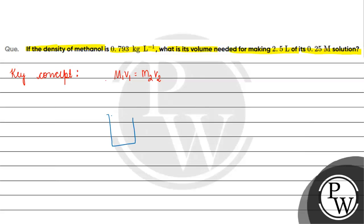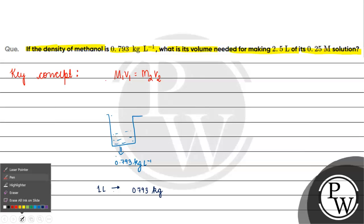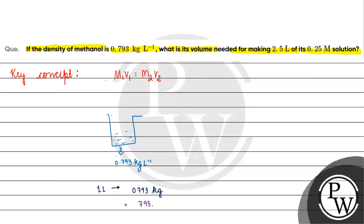What has been given? We have a solution. Its density is given, 0.793 kg per liter. That means in its 1 liter, 0.793 kg of solute is present. If we write it in grams, we can write it as 793 grams.